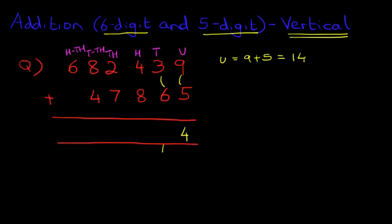Now we are going to add the tens. For the tens we have three plus six plus the one we have carried over. Three plus six is nine plus the one is ten. So let's write that down. We have one here and zero over here.